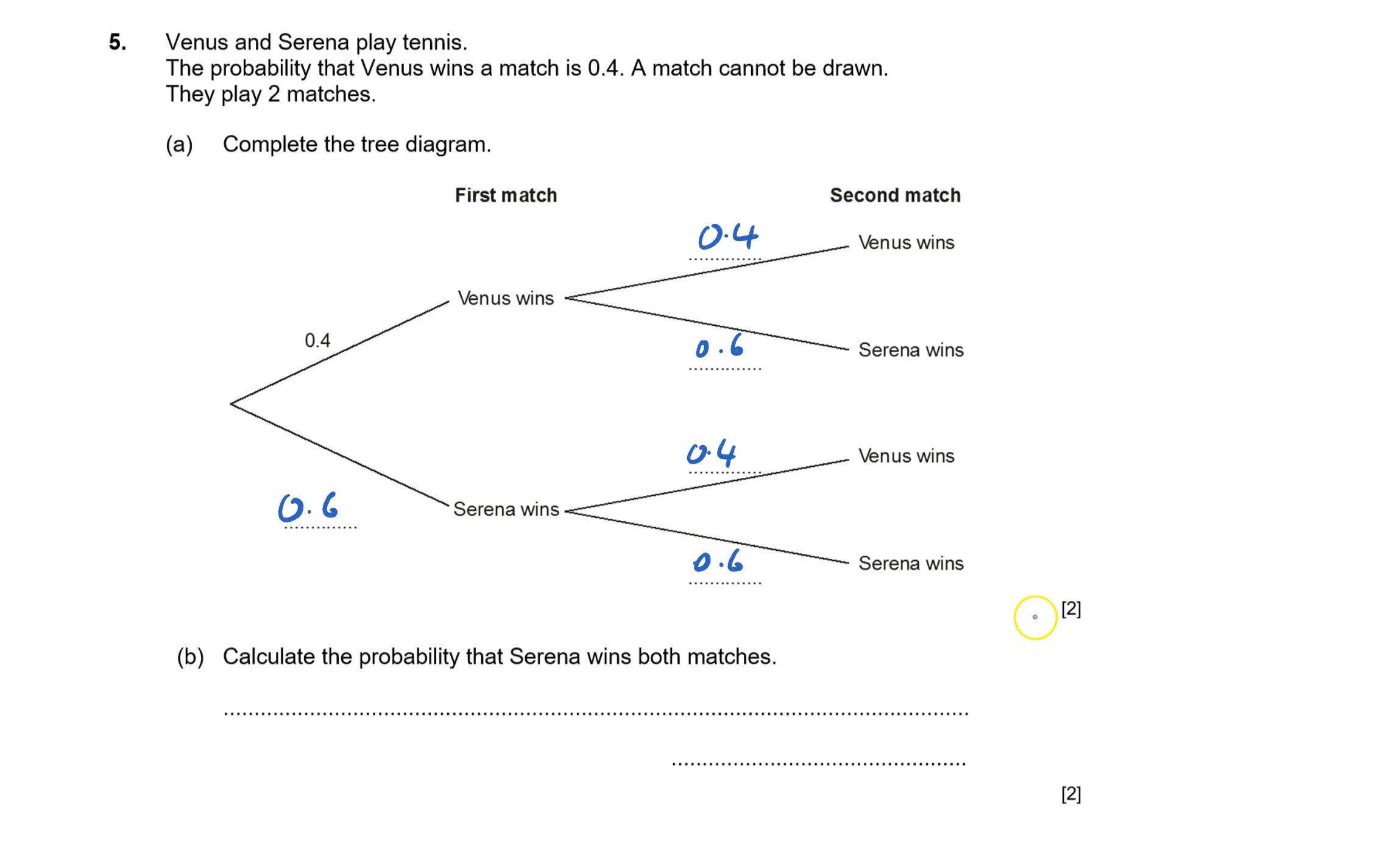That's the first one done, two marks for that. Now calculate the probability that Serena wins both matches. That means Serena's got to win the first match and then the second match.